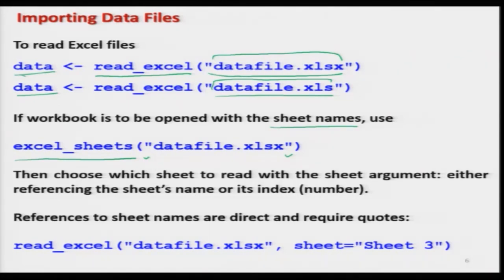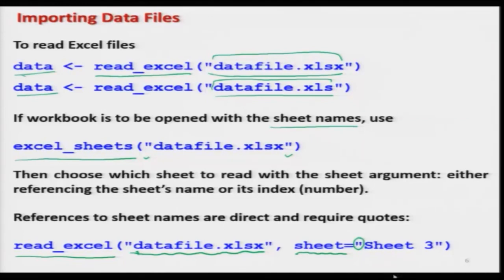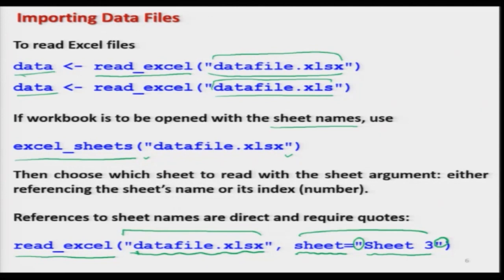To specify a particular sheet, use the command read_excel with the file name already provided, then add the argument sheet = followed by the name or index of the sheet within double quotes. For example, this command reads sheet number 3 from the data file named datafile.xlsx.